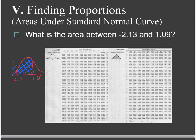We'll go on to our chart and we'll look for 1.09. So we go to 1.0 and over to 9, and we get 0.8621. From that we want to subtract -2.13, which is 0.0166. If we go ahead and do that subtraction, we will end up with 0.8455. So that's the area between those two points.